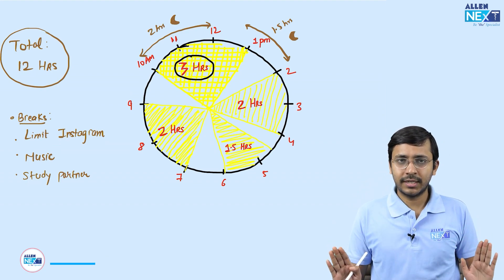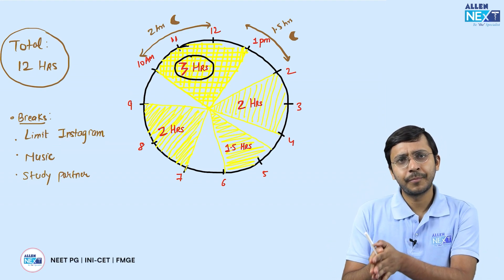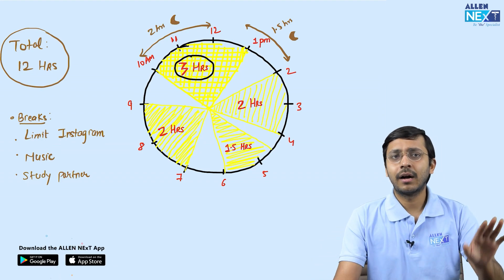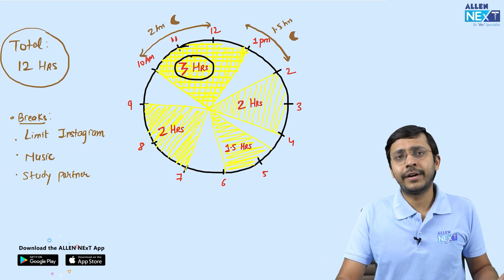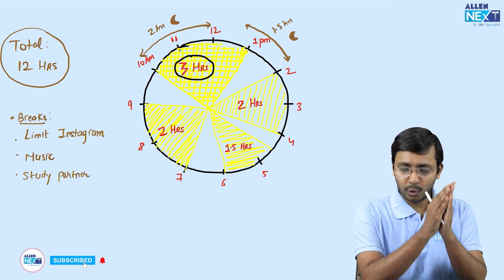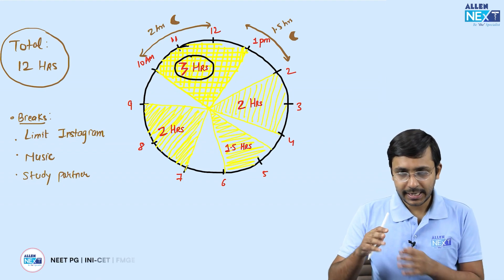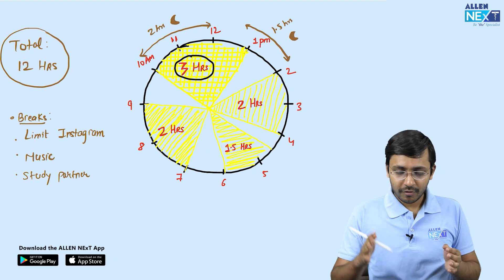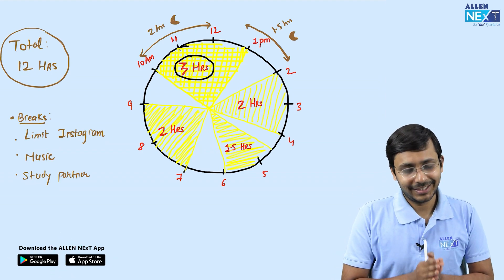I've given you a one-hour break for your lunch. You can complete your lunch in 20 to 30 minutes and half an hour you can relax, talk with your friends, watch something, do Instagram. Now from 2 to 4, two-hour study session, then half an hour break from 4 to 4:30, and then one and a half hour study session from 4:30 to 6.